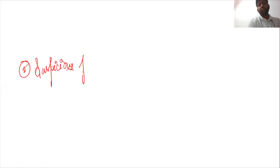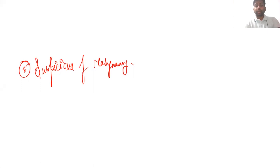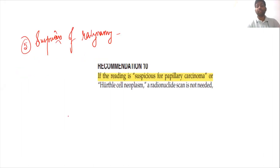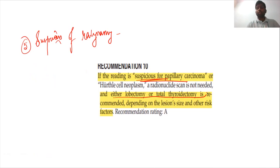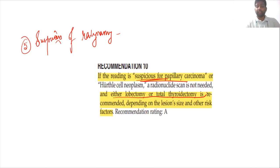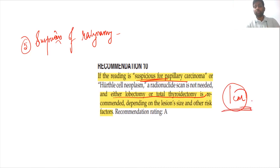For Bethesda category 5 — suspicious for malignancy, particularly suspicious for papillary cancer — no scanning is required. The decision is between lobectomy or total thyroidectomy depending on size and risk factors. The size cutoff is 1 centimeter: if less than 1 cm we can go for lobectomy; if more than 1 cm, or if serious risk factors are present, we go for total thyroidectomy.